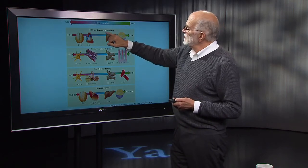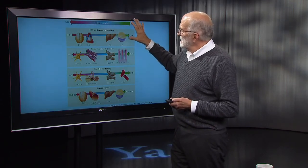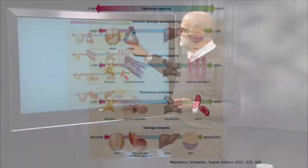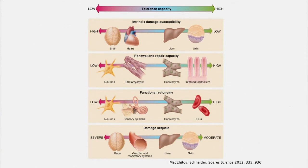But if it has a low susceptibility to damage — so skin and liver can be repaired fairly easily — it has a high tolerance capacity. That plays out through renewal and repair capacity, functional autonomy, and the sequelae of damage. The basic idea is that our bodies are mosaics, not only of different tissue types, but also mosaics of ability to tolerate infection.